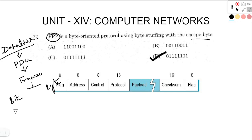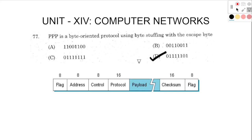In bit-oriented protocol, we use high-level data protocol (HDLC). In byte-oriented protocol, one of the protocols is PPP — Point-to-Point Protocol. Point-to-point protocol connects one router; if we use a root for client-server, we can access the data set. PPP is a byte-oriented protocol using byte stuffing with escape byte.